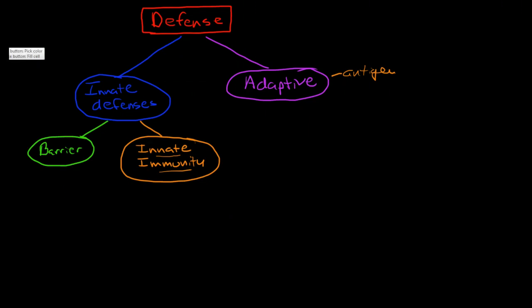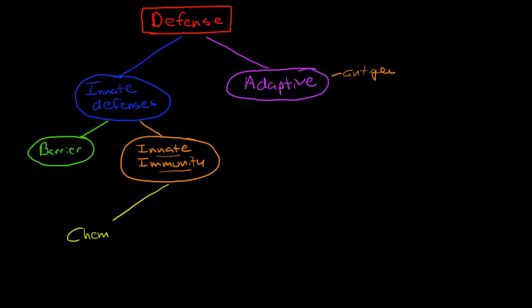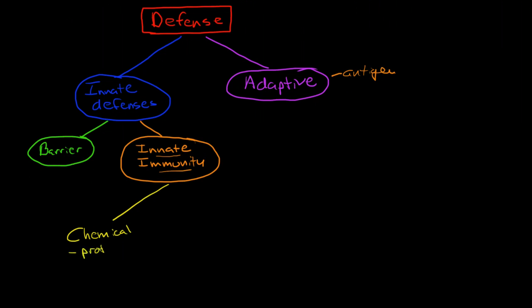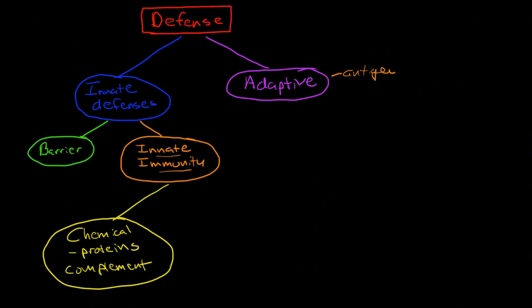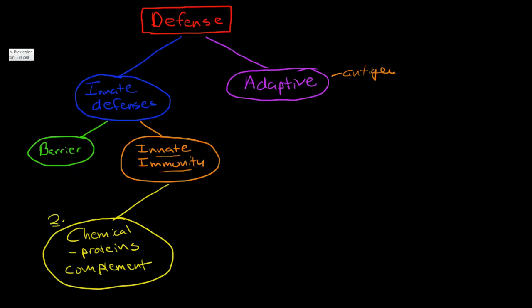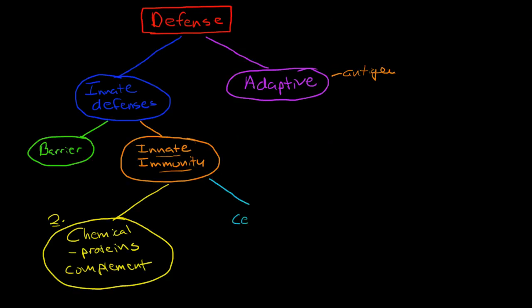The innate immune system can be subdivided into chemical immunity, which includes the proteins of the immune system — complement being the largest — and also the coagulation proteins, which play a significant role as well. The other element we're going to talk about first is the cells of the innate immune system.